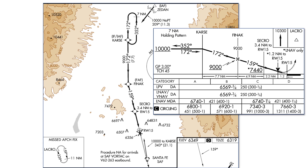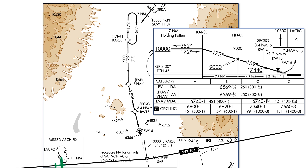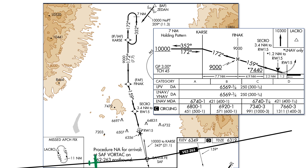Let's say our flight plan has us flying along Victor 62 coming from the west. This airway passes over the Santa Fe VOR which is just to the south of the airport. There's a big note next to the feeder route saying that the procedure is NA for arrivals at the VOR along this airway flying eastbound, which is exactly what we're doing.